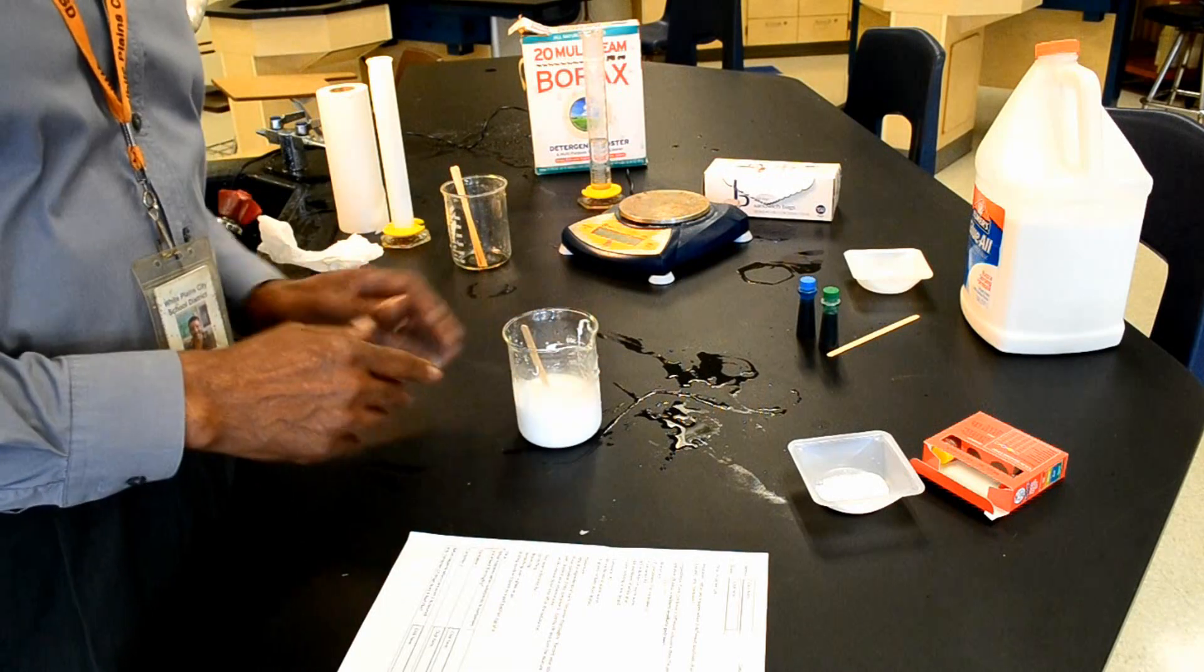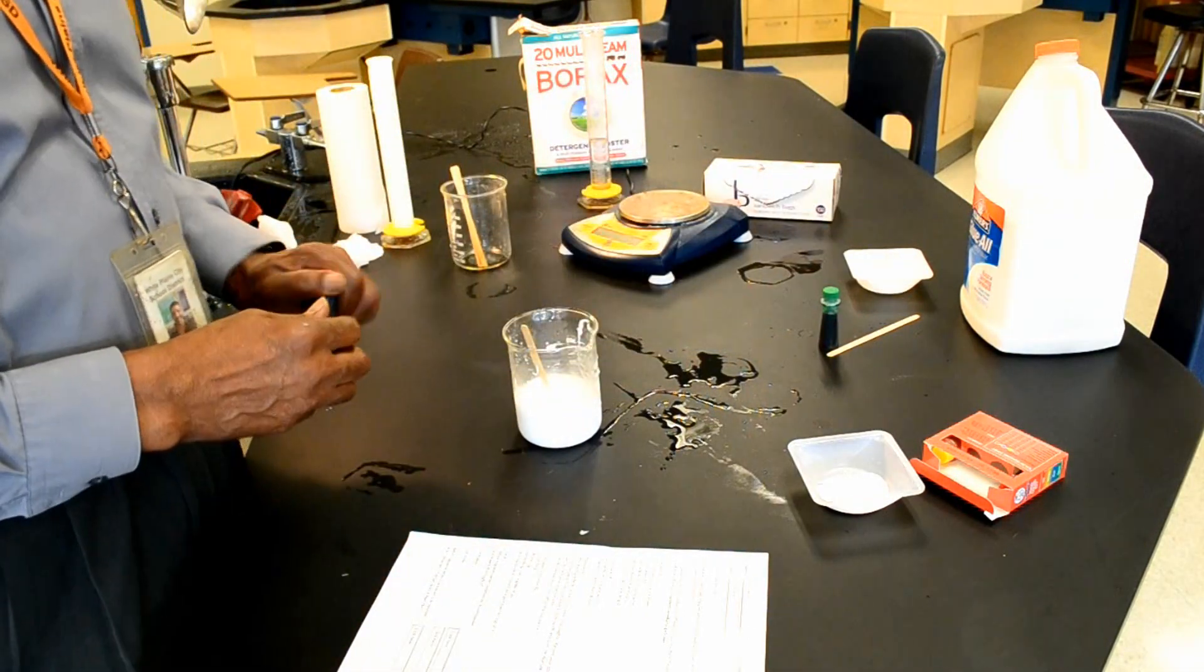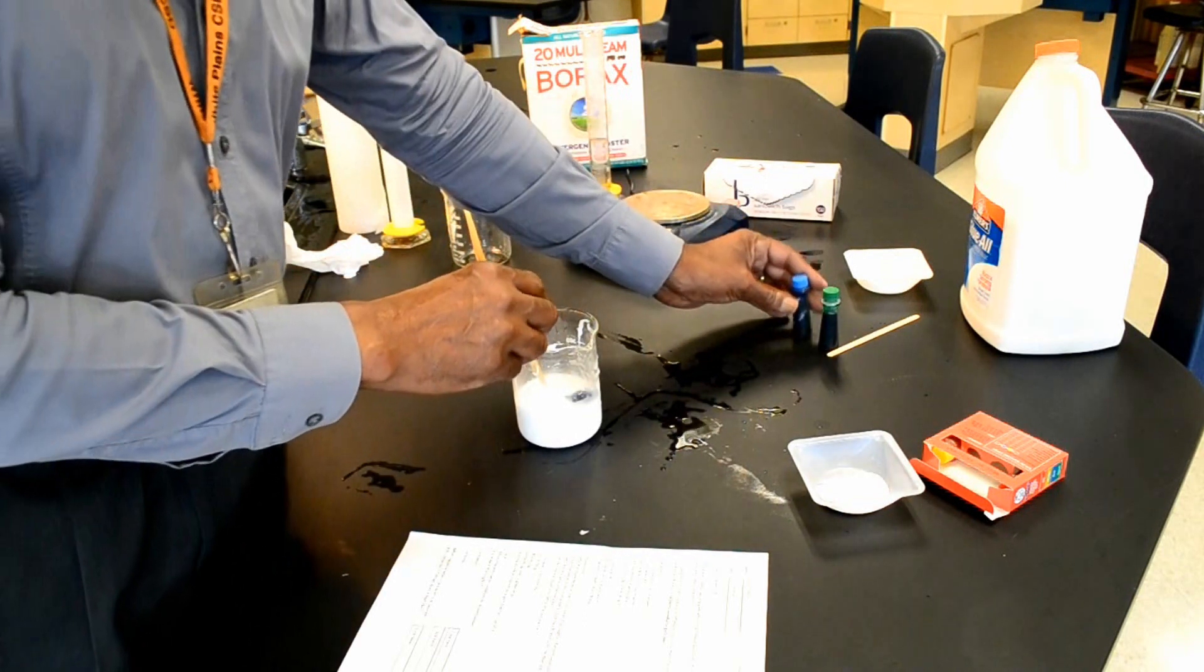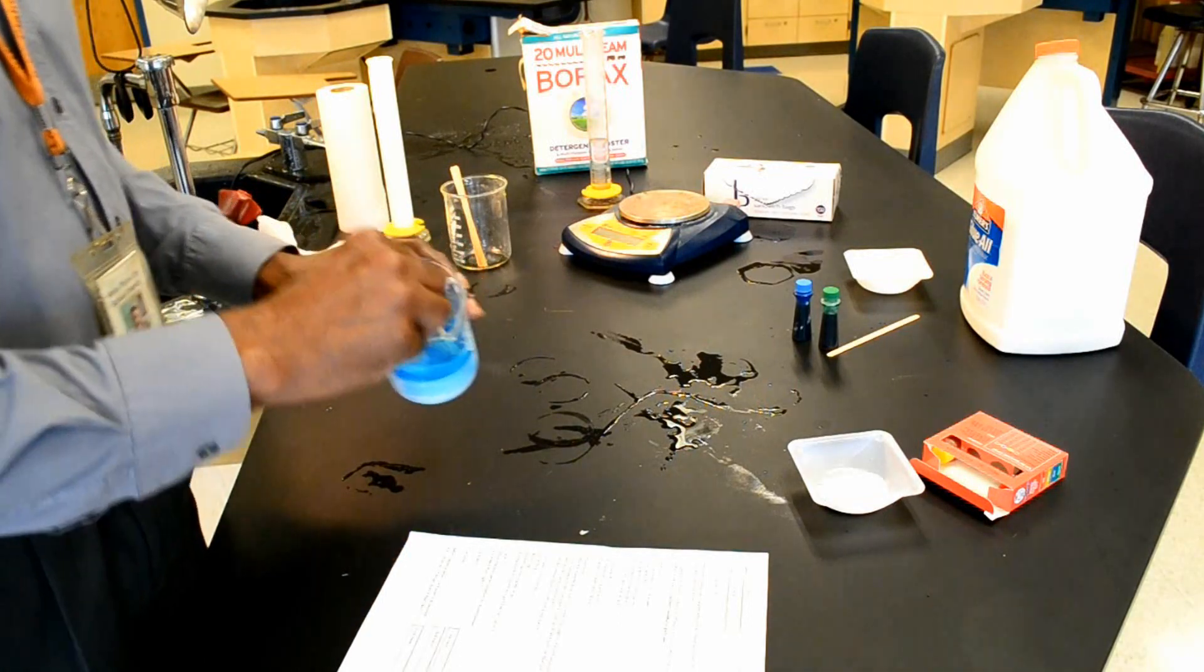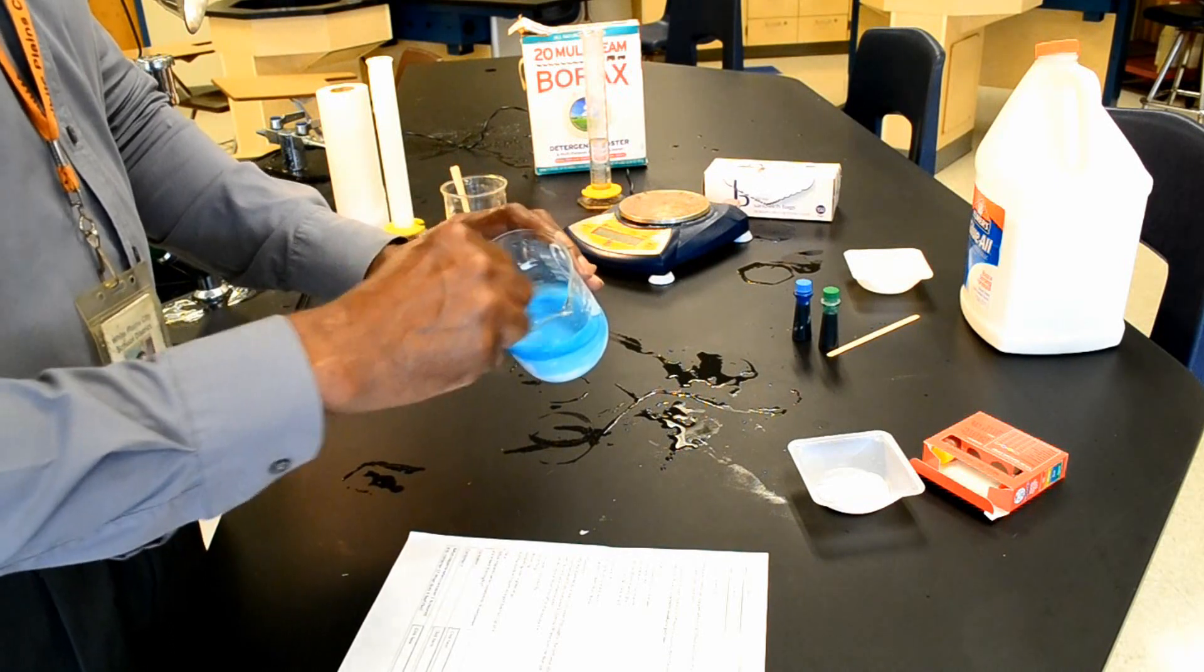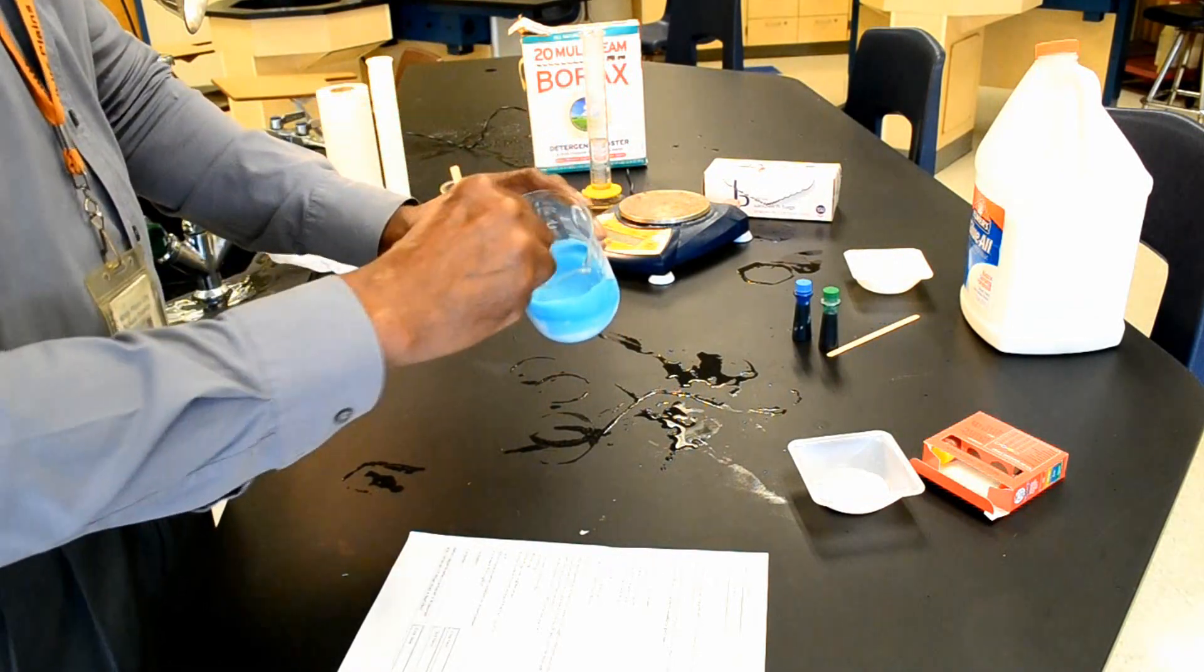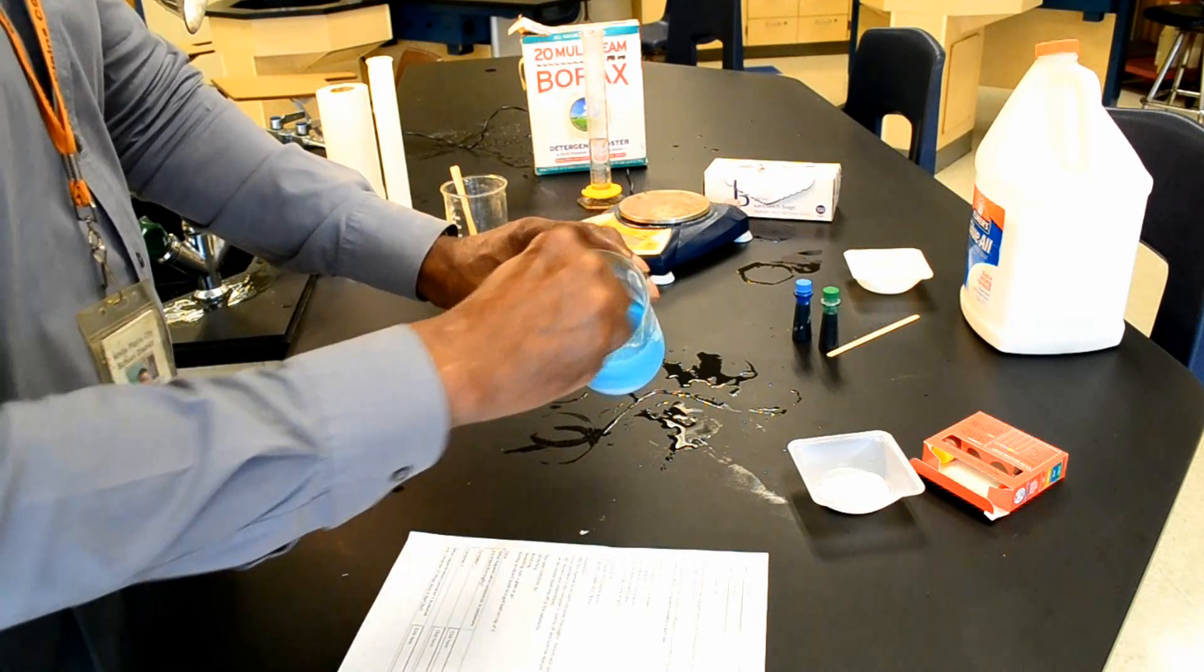There we go. Now we have a homogeneous mixture. Now I'm going to add some food coloring, so this particular flubber should have a blue color. Depending on what your artistic talent is, you can either stir it a little bit to give it a swirl at the end, or mix it all together thoroughly to form another homogeneous mixture.